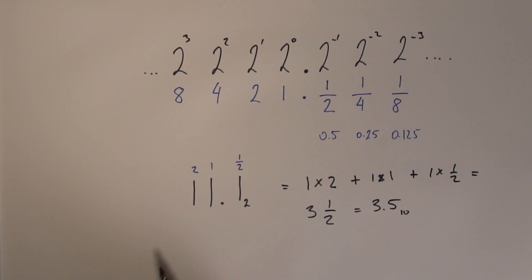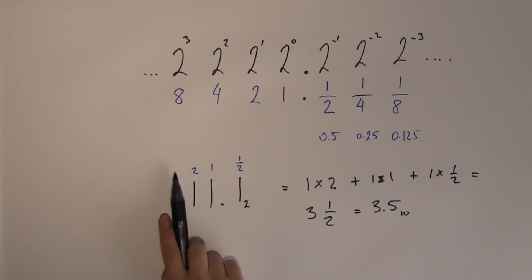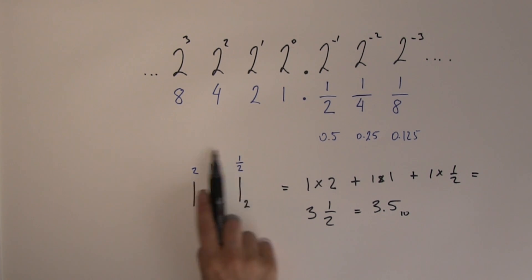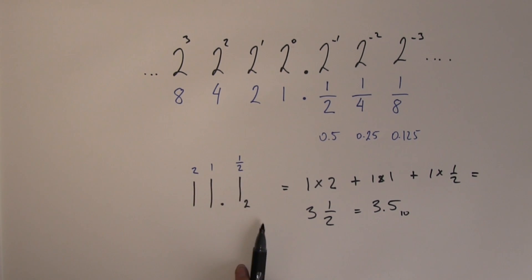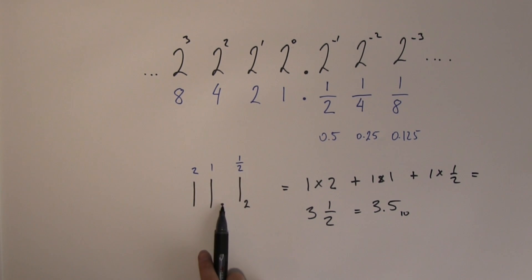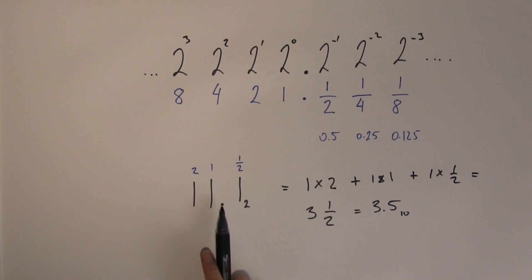When reading out binary numbers with a fractional part, you don't say just 'point' — you say 'radix point'.